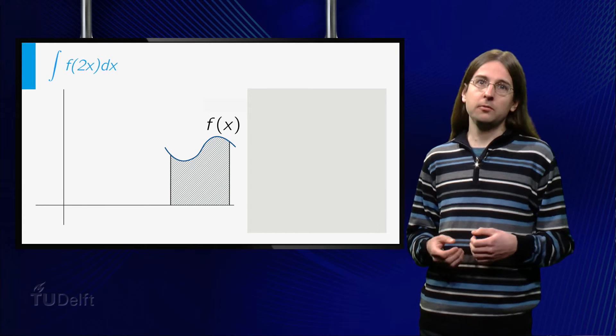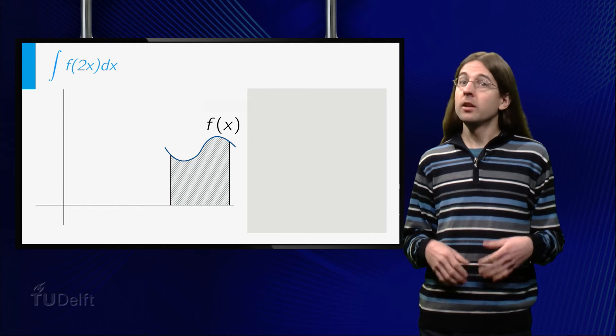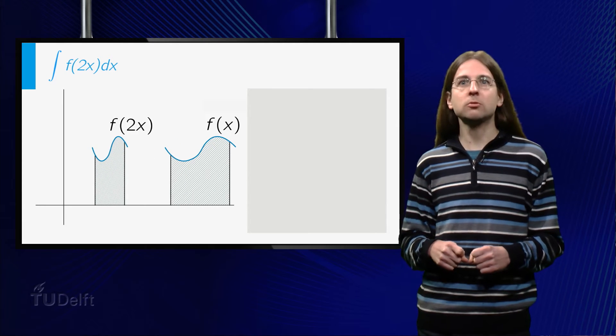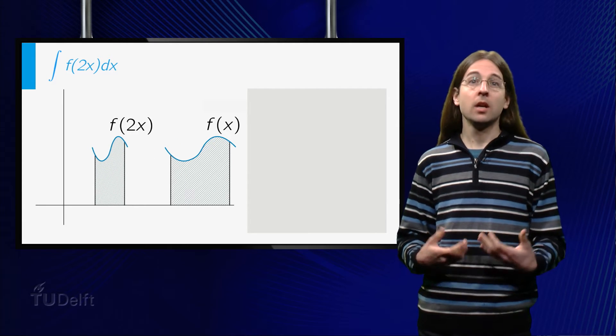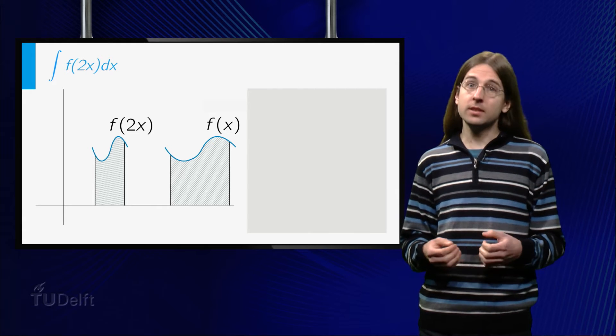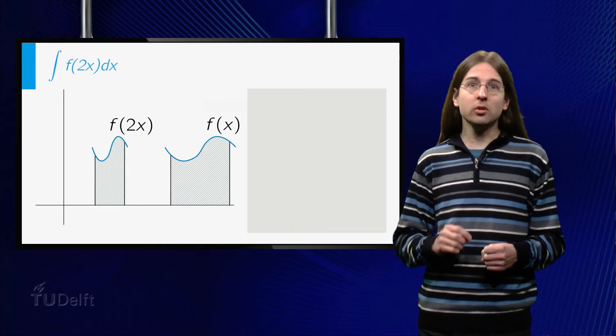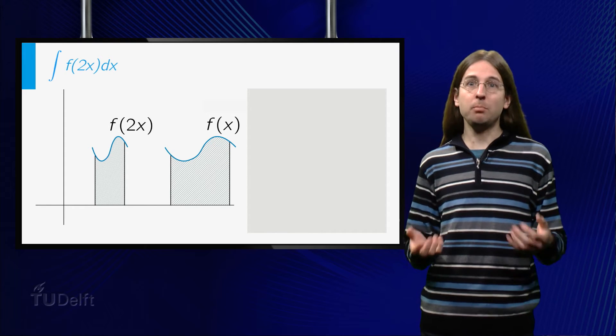If we consider the graph of f of 2x, we see that we compress the graph by a factor of a half towards the y-axis. The area under the curve is thus also halved. Notice that the endpoints of the integral have been multiplied by one half as well.